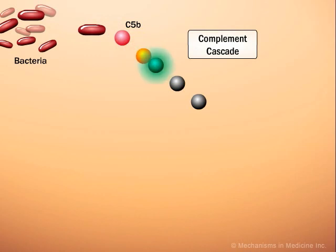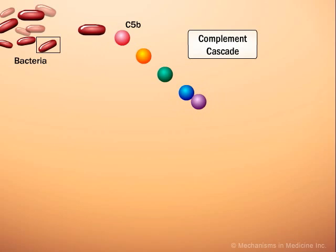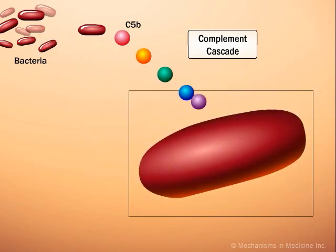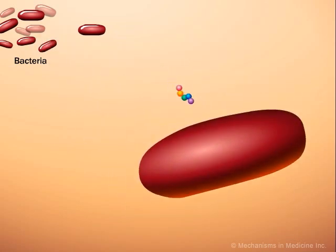Under situations of normal glycemia, bacteria can activate the complement cascade. Activation of the complement cascade results in the formation of transmembrane protein channels, known as membrane attack complex, or MAC.